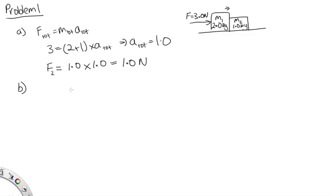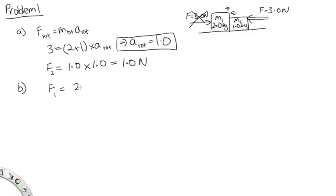Part B: what happens if the force is applied in the other direction — 3 newtons on the other side? The acceleration of the system is going to be the same. But the force which m2 pushes on m1 is F₁ = m₁ × a = 2.0 × 1.0 = 2.0 newtons. This is greater because m1 has a higher mass than m2. If we apply the force to m2, less of that force is used up, so more is left to push m1.